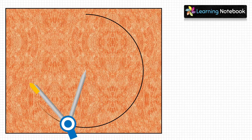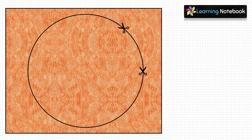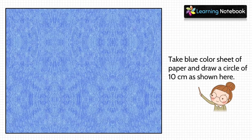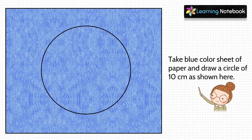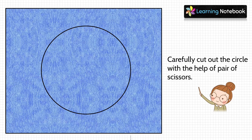Next, take the orange-colored sheet and again draw a circle of 15 centimeters on it, then carefully cut out this circle. Next, take a blue-colored sheet and draw a circle of 10 centimeters on it, then cut out this circle with the help of a pair of scissors.